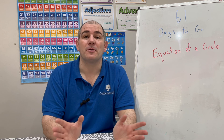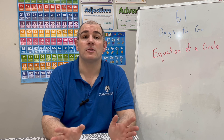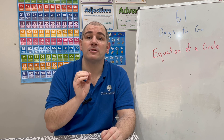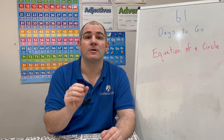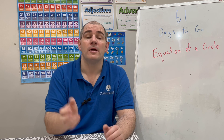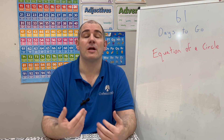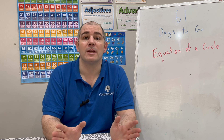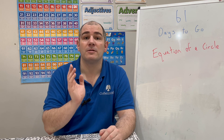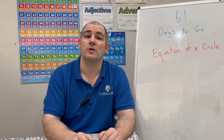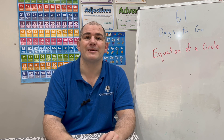In this video we've looked at the equation of a circle: x squared plus y squared equals r squared, where the centre is the origin (0, 0) and the radius is r. We've gone through several questions and I hope you found it useful. There are 61 days to go to the GCSE Maths exam — keep up the hard work, and tomorrow at 3 o'clock on YouTube we'll look at the next topic. See you tomorrow!